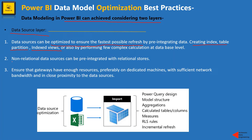If we talk about non-relational data sources, those sources can be pre-integrated with relational stores. Also, if we have an on-premises data source, we can ensure the gateways have enough resources, preferably on dedicated machines. We should also make sure sufficient network bandwidth is available and that the data gateway is installed and set up as close as possible to the data source. These are the key factors to consider at the data source layer when optimizing the data model.